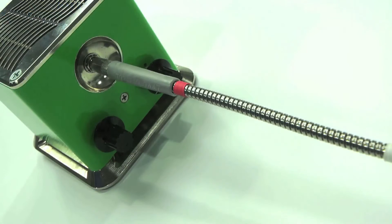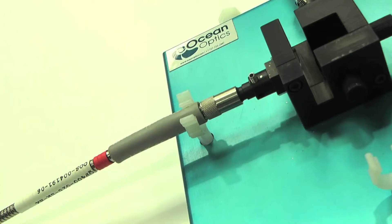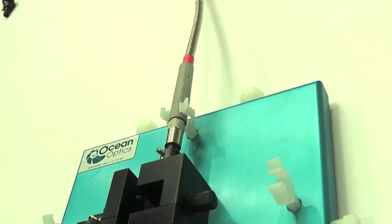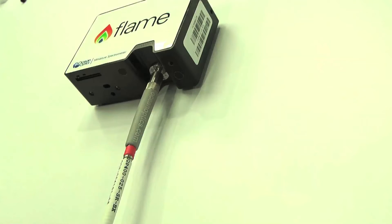To set up the instrumentation for fluorescence measurements, we simply connect one end of a patch cord to our light source and the other end to the sample holder. We then attach the other patch cord at 90 degrees to the first and the other end of that to the spectrometer.